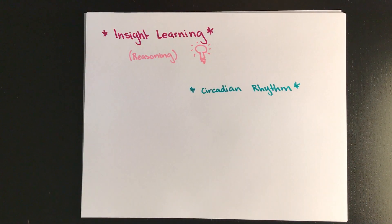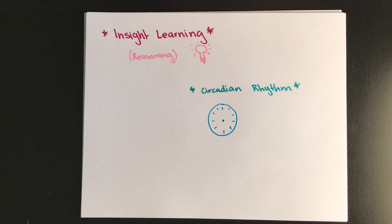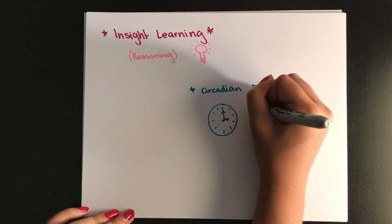A circadian rhythm is the name for the biological clock in the organism, and it triggers them to do something regularly. An example of this would be humans sleeping, waking up in the morning.